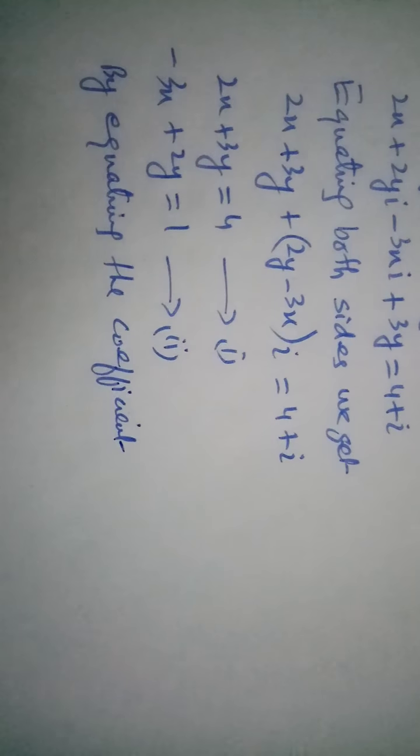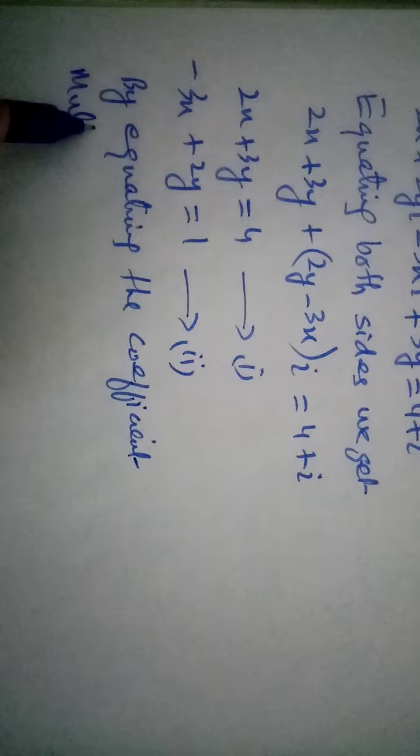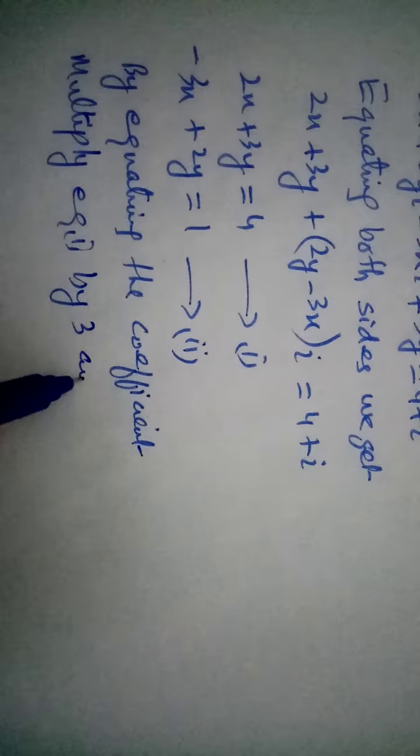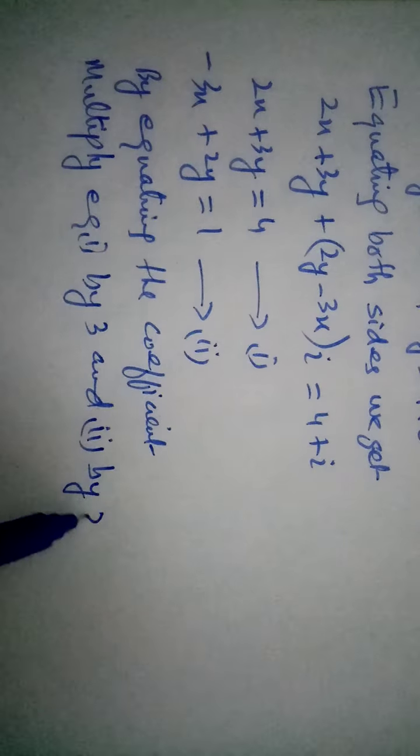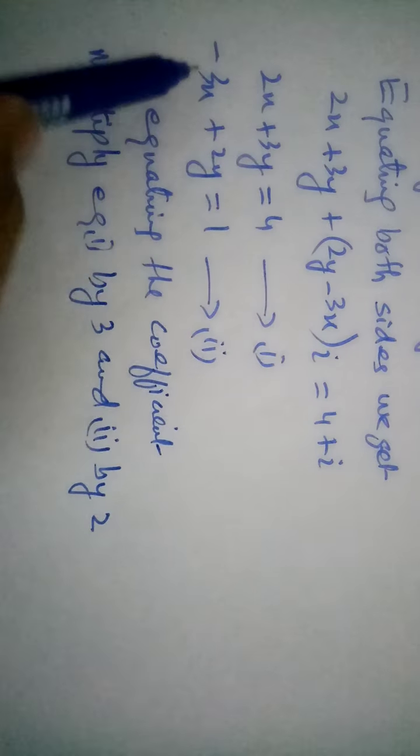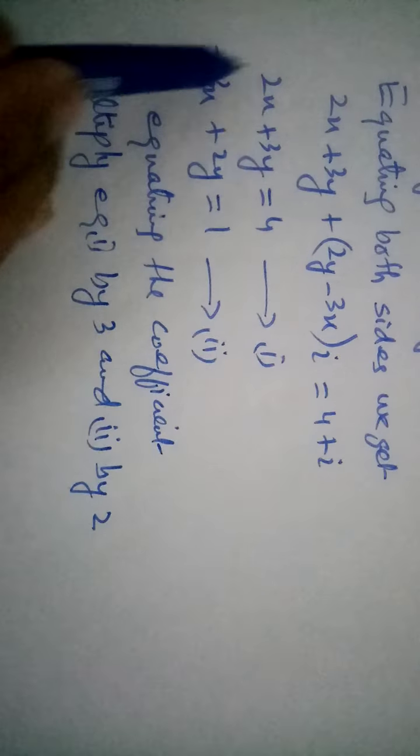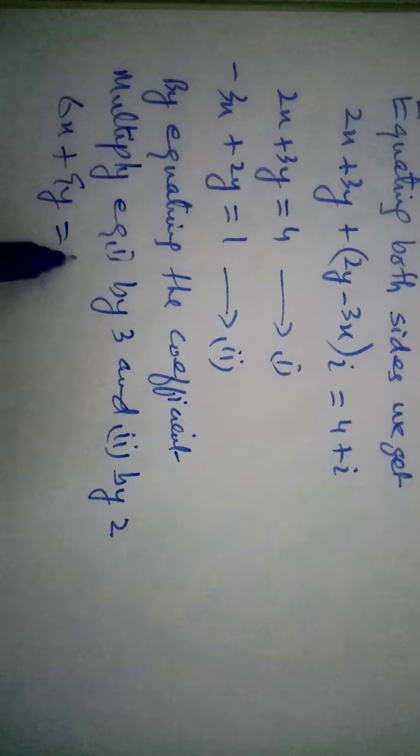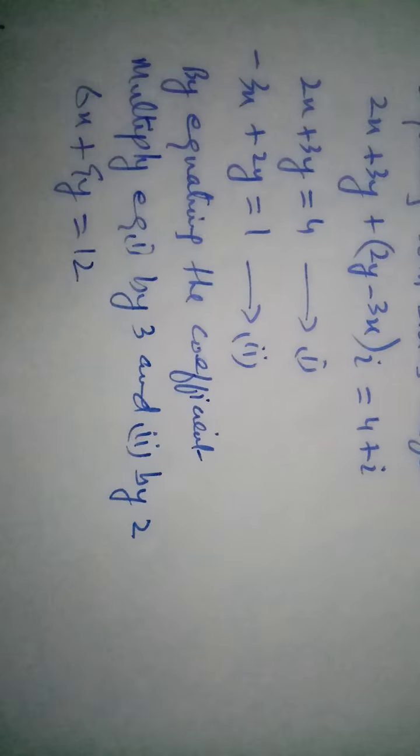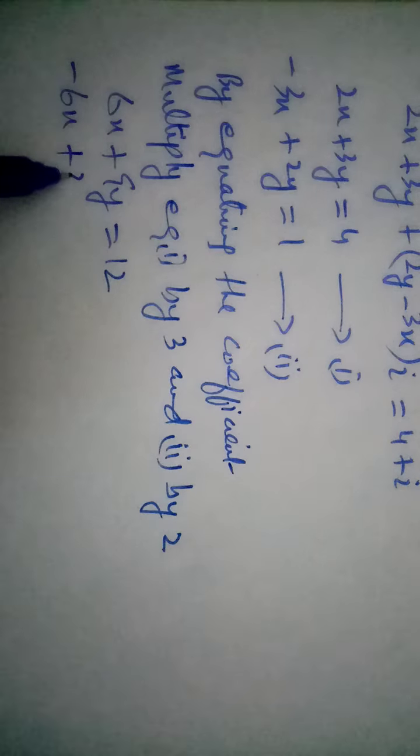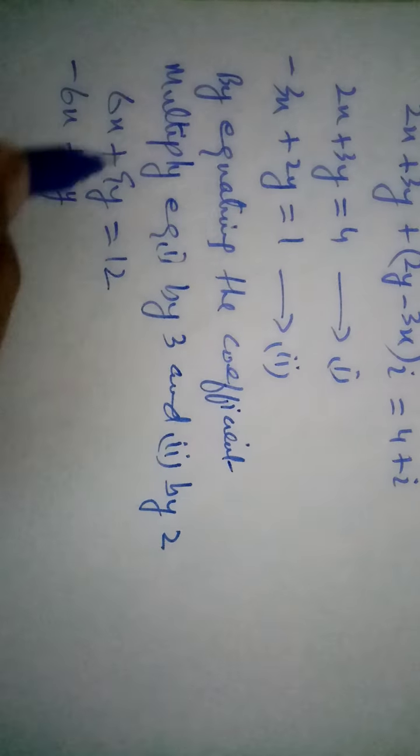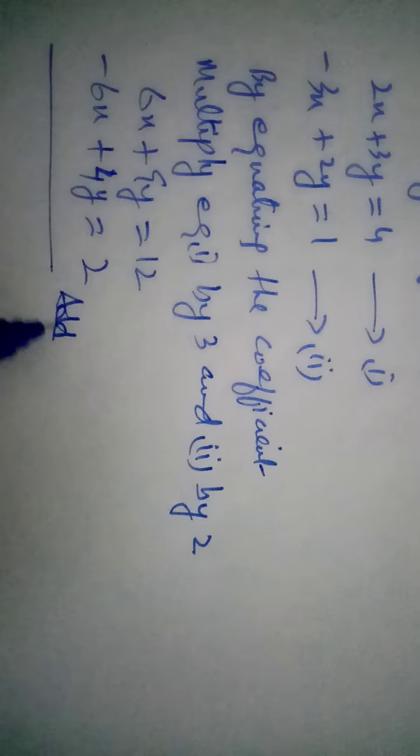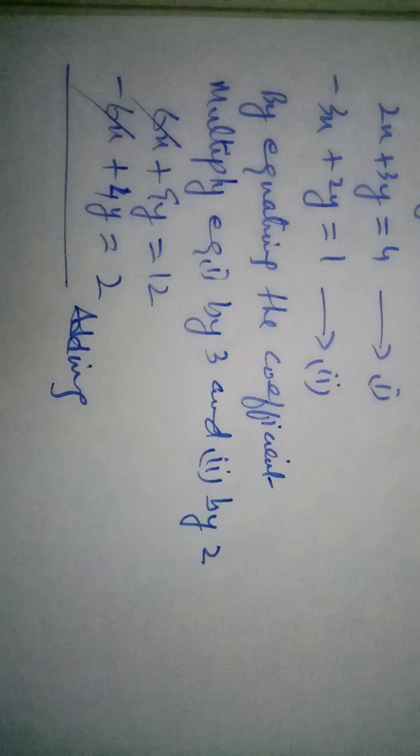By equating the coefficient we get, multiplying equation 1 by 3 and 2 by 2. Now we get 6x plus 9y is equal to 12. And here for second equation minus 6x plus, sorry 4y is equal to 2.